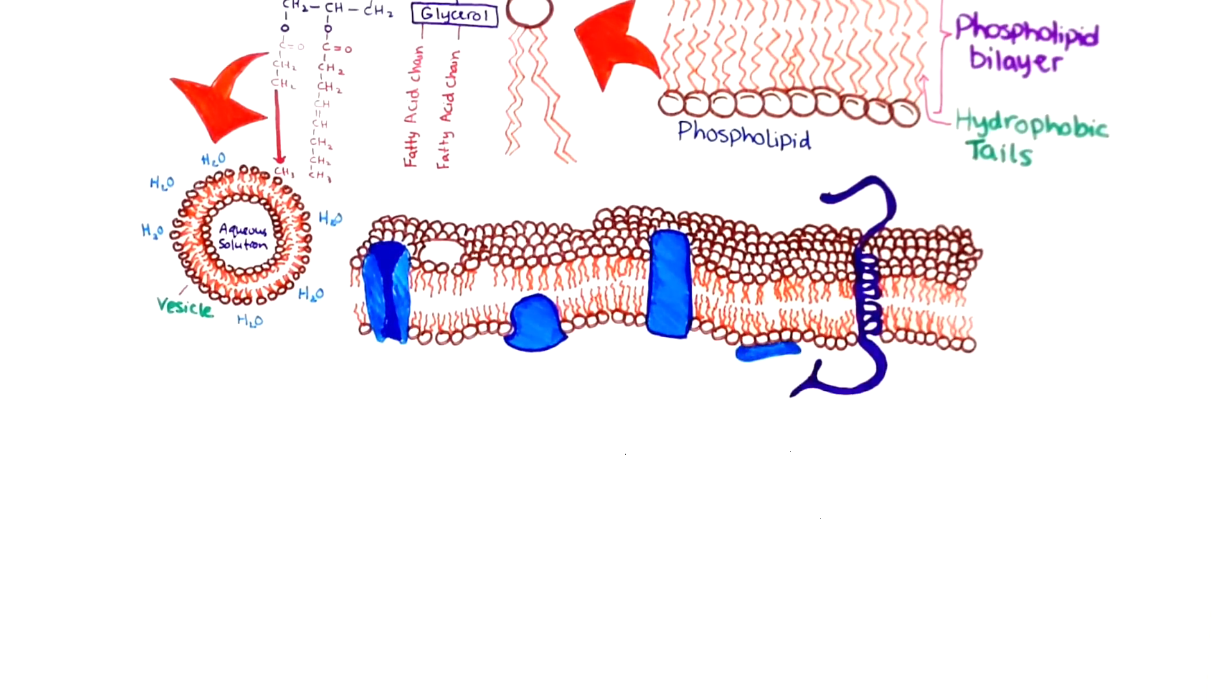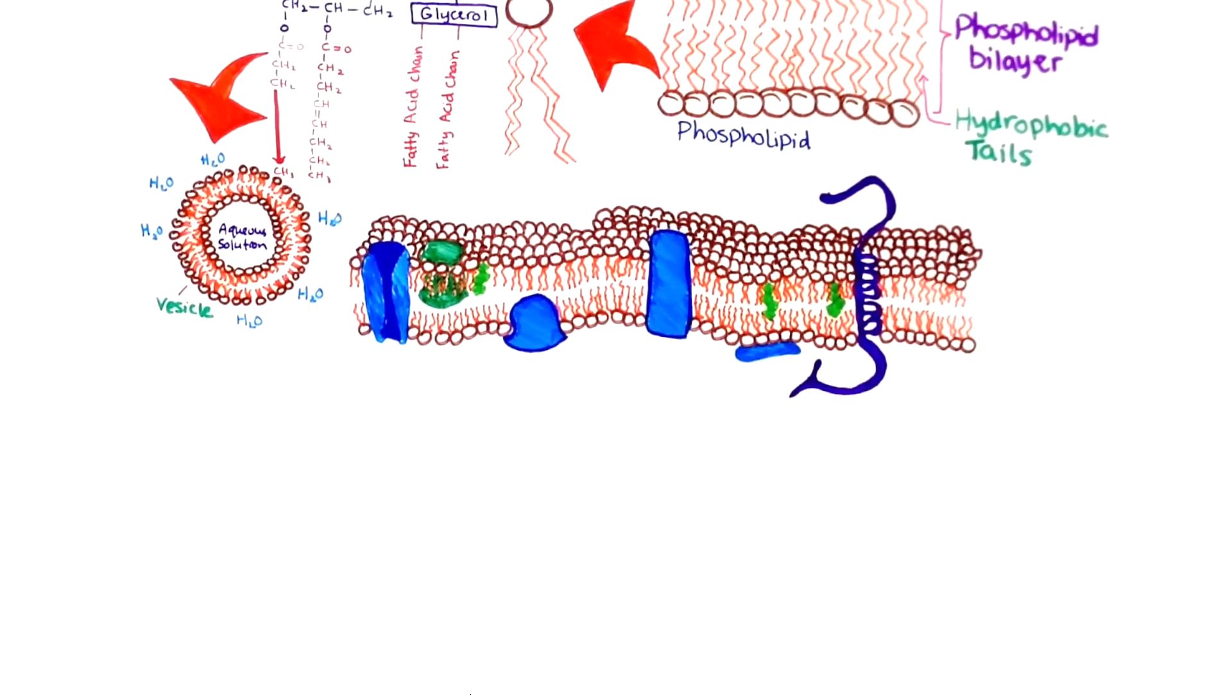The plasma membrane keeps the contents of a cell separate from the environment surrounding it. In addition to phospholipids, the plasma membrane has proteins that allow the membrane to function properly. Proteins embedded in the membrane play important roles in helping the cell communicate with its environment, including with other cells, and with transporting materials into and out of the cell.